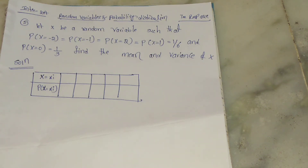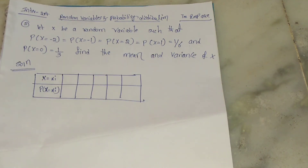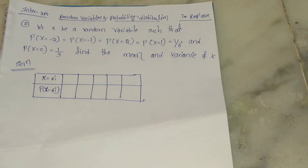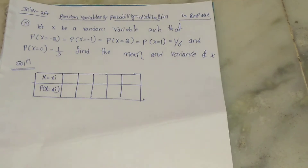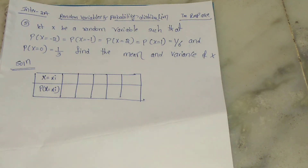This is the second question. Let X be a random variable such that probability of X = -2 equals probability of X = -1 equals probability of X = 2 equals probability of X = 1, which is 1/6, and probability of X = 0 is 1/3. Find the mean and variance of X.